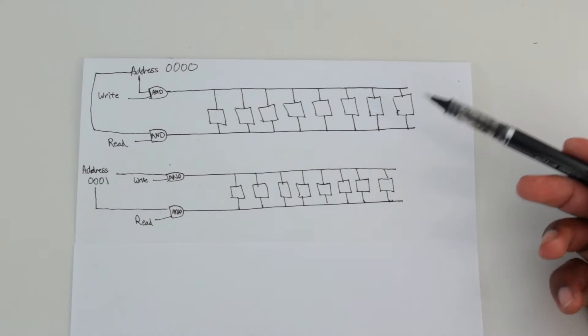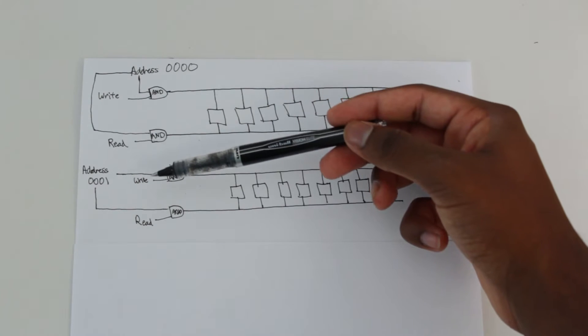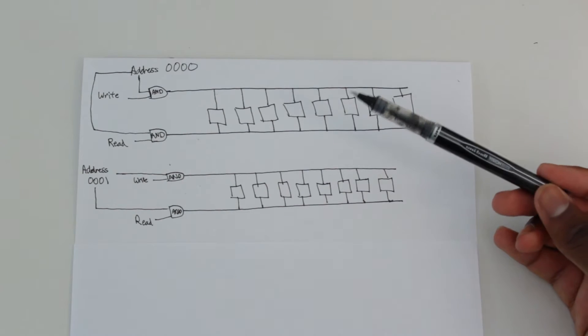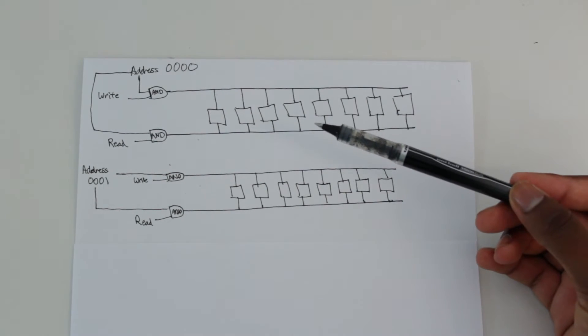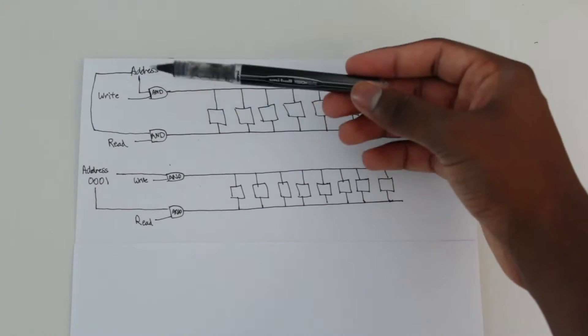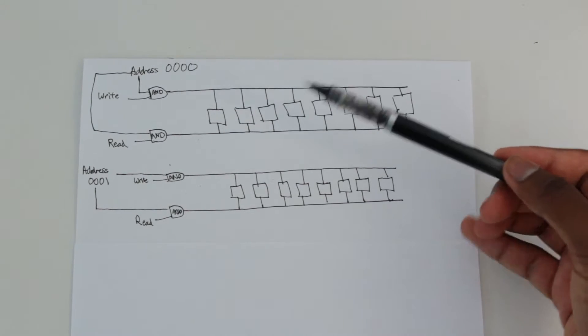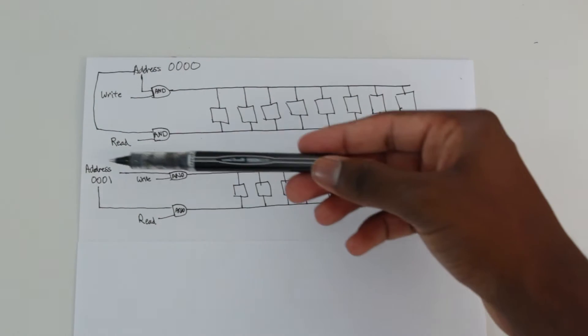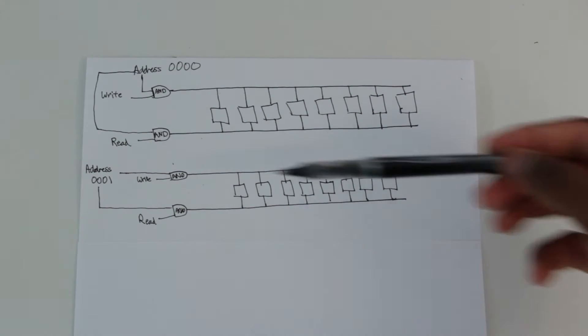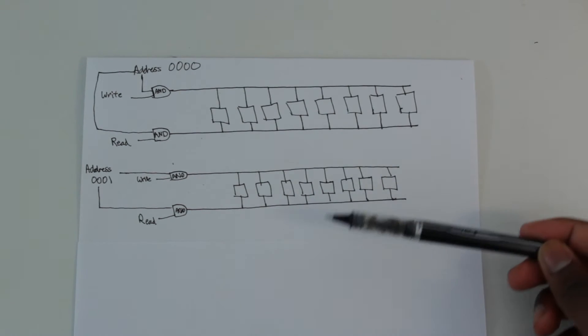So the solution is to have an address before the write and before the read on each one, and then an AND gate. So basically, think of it as a switch. We flip the switch on this first byte, which means yes, we want to talk to this first byte, and then we say whether we want to read or write. And then we can do the same for the second bit. We can flip the switch for the second bit and say yes, I'm interacting with the second byte right now, and I want to write or read.